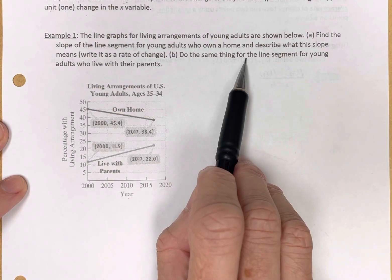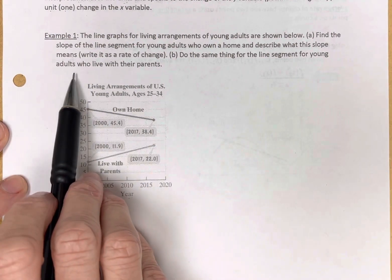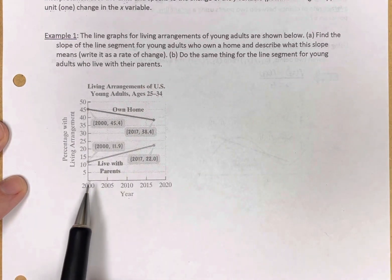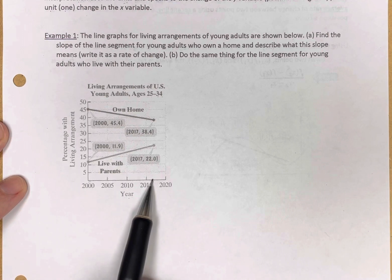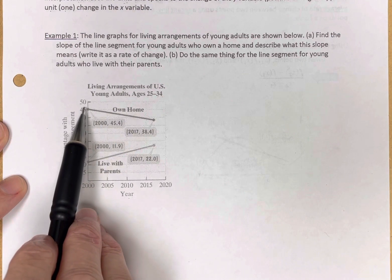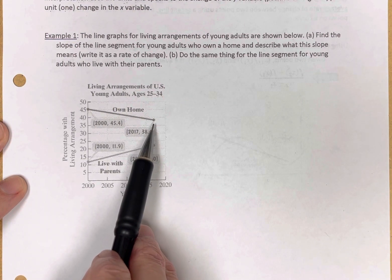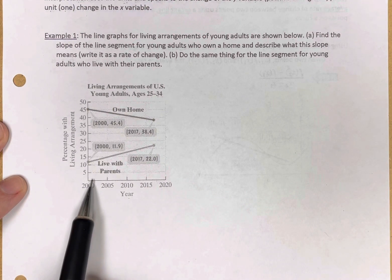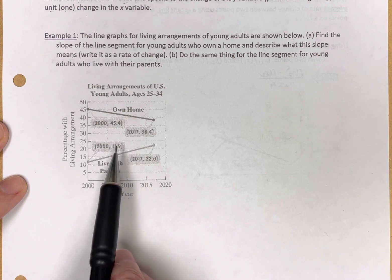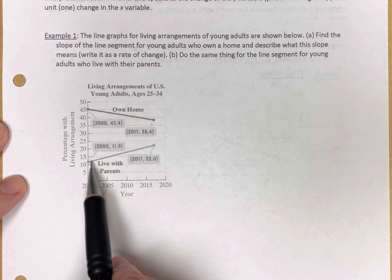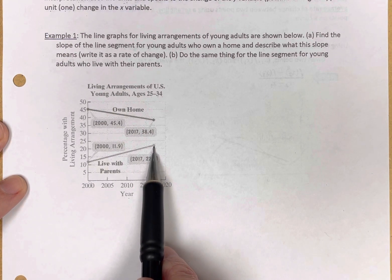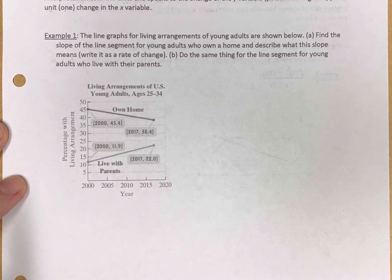And then letter B, let's do the same thing for the line segment for young adults who live with their parents, which is this line segment right here. Off the bat, we can see that from the years 2000 to 2017, the percentage of young adults who own a home has decreased. Fewer young adults own a home in 2017 than in 2000. At the same time, the percentage of young adults who live with their parents has increased. More young adults are living with their parents in 2017 than were living with their parents in 2000.